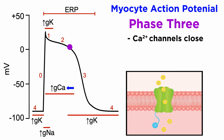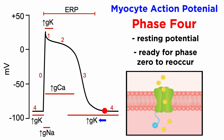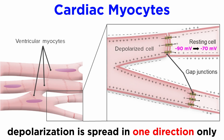Following phase 2 is phase 3, where calcium channels close and potassium efflux is sustained and supported extensively by slow-delay rectifier potassium channels, which rectifies the depolarization back towards baseline until resting potential is reached, ready for phase 0 to reoccur for the next heartbeat. It's important to note that retroactive contraction of the heart is not possible due to the refractory period caused by phases 0 through 3. This means that myocytes contract and cause depolarization in neighboring cells in a unilateral directive mechanism, and the electrical activity caused by ion movement can't cause contractions in previously activated myocytes.